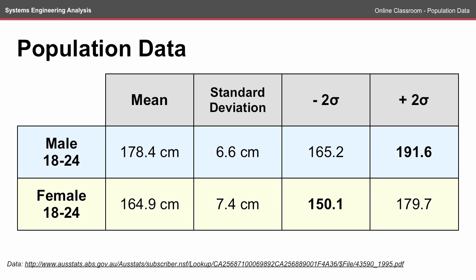So within the range 1.65 to 1.91 meters for adults, you're likely to have 95% of all males, and likewise with the females.